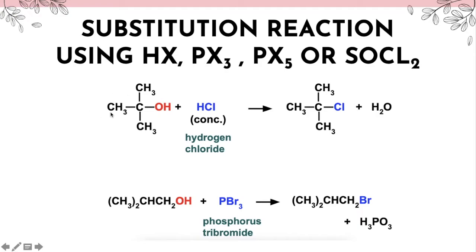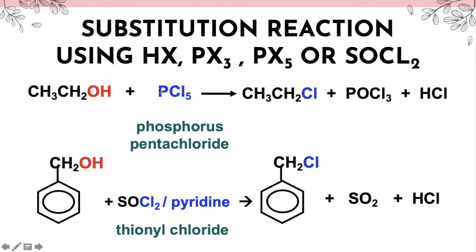Examples of substitution reactions: With HCl, only Cl replaces OH giving the haloalkane plus H₂O. With PBr₃, only one Br replaces OH giving the bromoalkane plus H₃PO₃. With PCl₅, only one Cl replaces OH giving CH₃CH₂Cl plus POCl₃ plus HCl. With SOCl₂ or pyridine, one Cl replaces OH giving the chloroalkane plus SO₂ plus HCl.